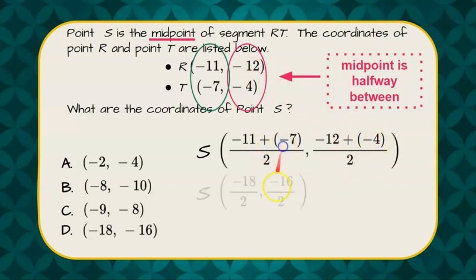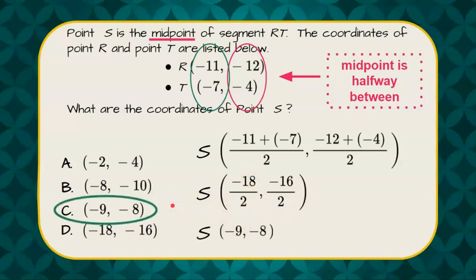Negative 11 and negative 7 are negative 18, and negative 12 and negative 4 are negative 16. Now divide each by 2 and we get negative 9, negative 8, giving us an answer of C.